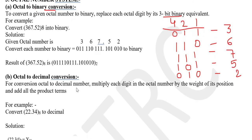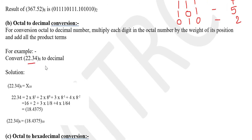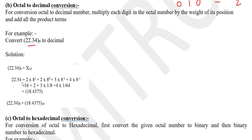Next is octal to decimal conversion. When we convert an octal number to decimal, we multiply by powers of 8. Suppose we have 22.34 in octal and need to convert it to decimal. We multiply each digit by 8 to the power 0, 8 to the power 1, and so on for the integer part.